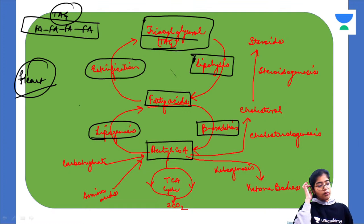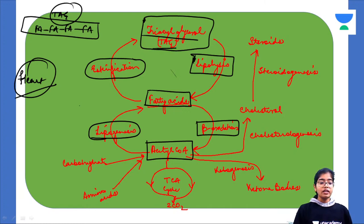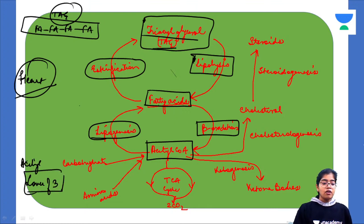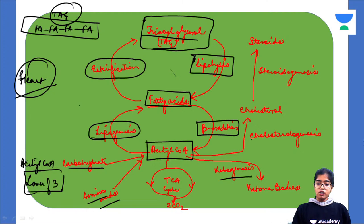Acetyl-CoA enters the TCA cycle and generates ATP. It is the linker molecule — a lover of three — because it is formed from three different pathways: fatty acid metabolism, carbohydrate metabolism, and amino acid metabolism. It is also involved in three different pathways: ketogenesis, cholesterologenesis, and the TCA cycle.